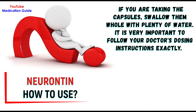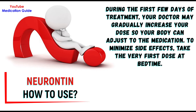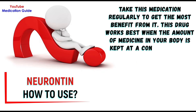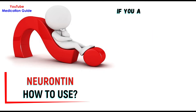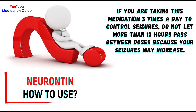It is very important to follow your doctor's dosing instructions exactly. During the first few days of treatment, your doctor may gradually increase your dose so your body can adjust to the medication. To minimize side effects, take the very first dose at bedtime. Take this medication regularly to get the most benefit from it. This drug works best when the amount of medicine in your body is kept at a constant level. Therefore, take Gabapentin at evenly spaced intervals at the same time each day. If you are taking this medication 3 times a day to control seizures, do not let more than 12 hours pass between doses, because your seizures may increase.